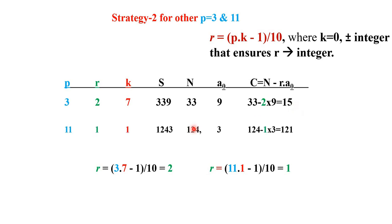Another example is if p equal to 11 and this time your search gives you k=1 for p=11 and to get integer r=1 and here is the 4 digit number 1243, you drop the last digit to get 124. Now you subtract 1 into 3, 1 because r is 1 and a₀ is 3. So 1 into 3 and you get 121 and that is divisible by 11.